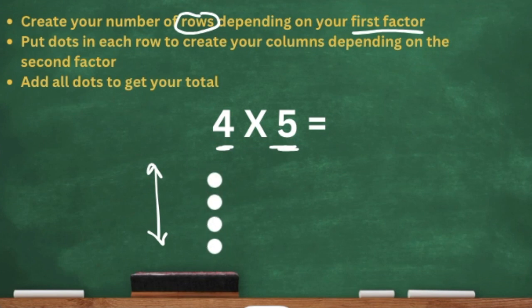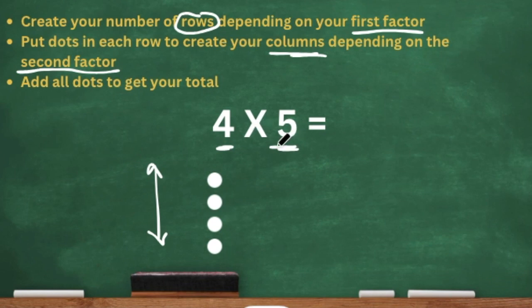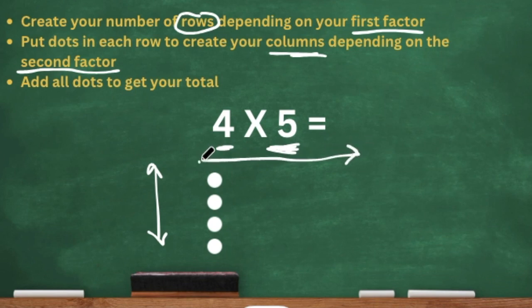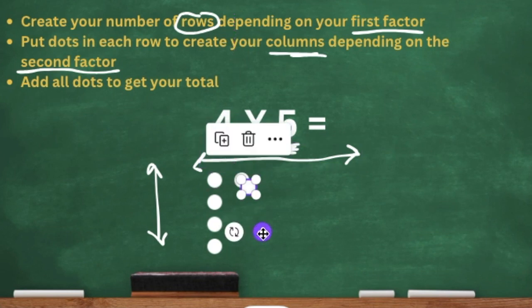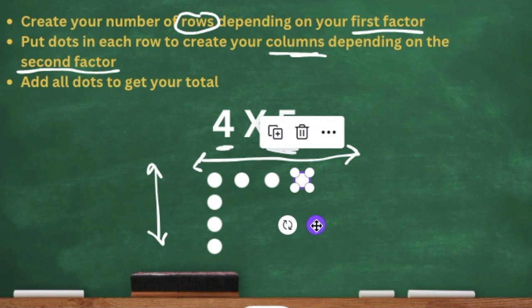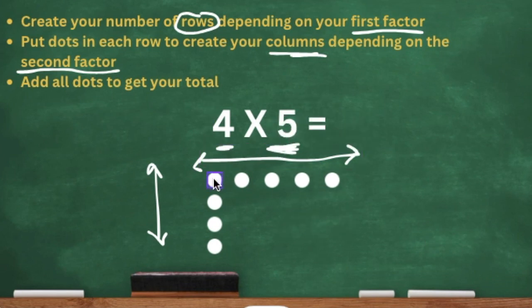Now we are going to put dots in each row — that's how we create our columns. We look at the second factor, which is five. So in each row we're going to have five dots. The columns go from left to right. So we add dots: that's two, three, four, and now five. We have five dots in the first row.